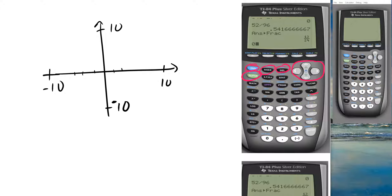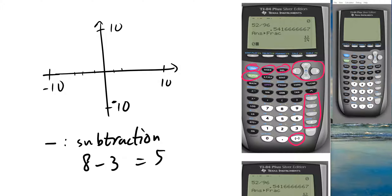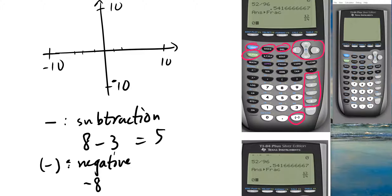In this column we have division, multiplication, subtraction, and addition. There's also an important key — the negative sign. The subtraction sign is used for expressions like 8 minus 3. But the negative sign is used when you want to enter a negative number, like negative 8 plus 7. If you use the subtraction key instead of the negative key in that context, the calculator will give you an error.